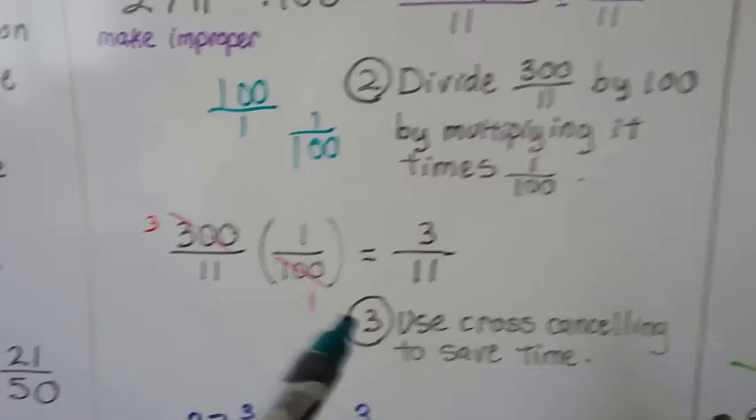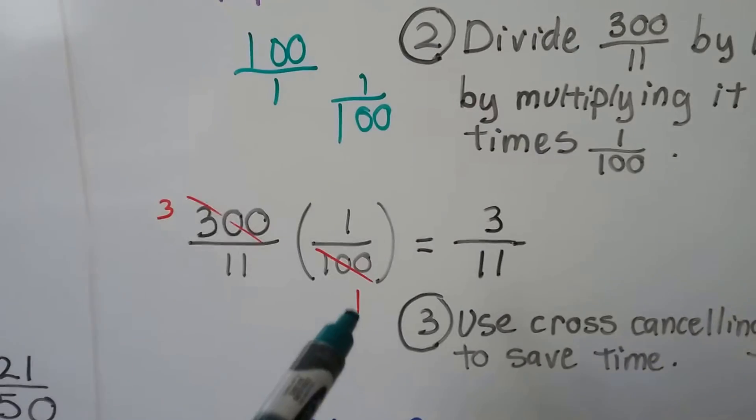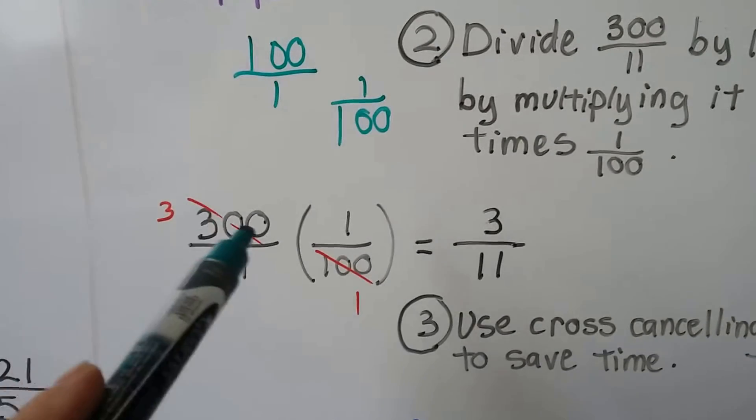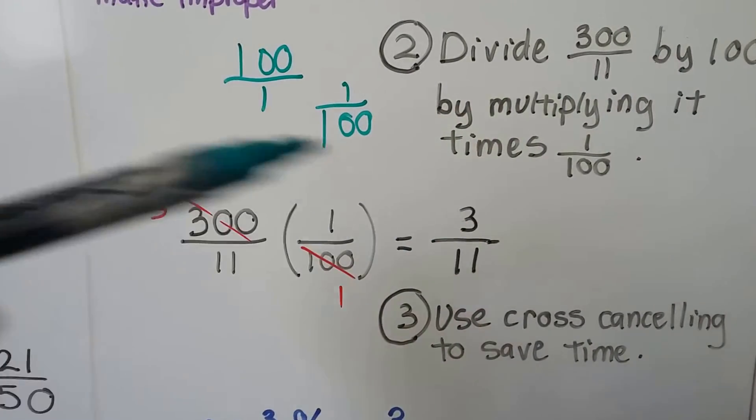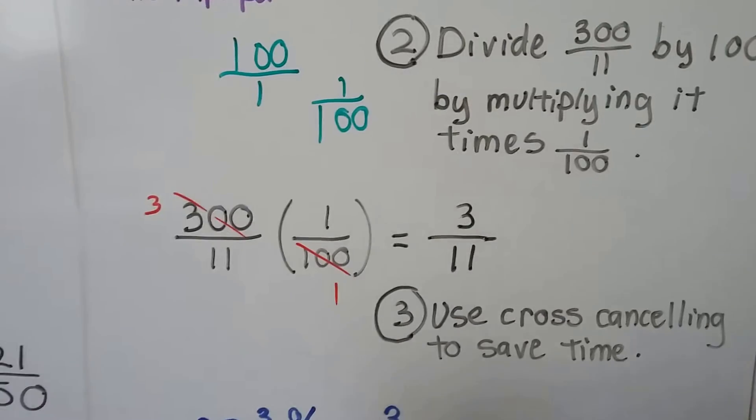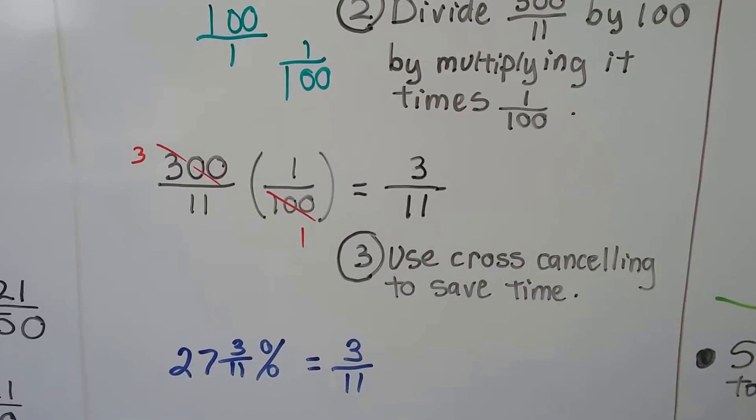Now we've got 300 over 11 times 1 over 100. We can do some cross-cancelling. There's 100 here, so we cross it out and write a 1. There's 3 hundreds here, so we make that a 3. We get a 3 as our numerator and 11 times 1 is 11. We get 3 elevenths. By cross-cancelling, we save some time.